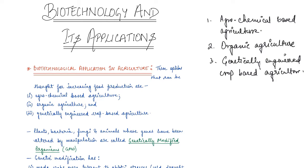Use of genetically modified crops can be a possible solution. Basically, plants, bacteria, fungi, and animals whose genes have been altered by manipulation — what we do is improve and modify the genes of any such organism, we manipulate and alter them.